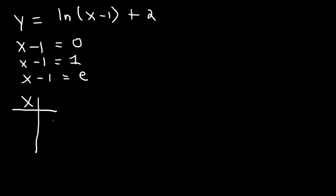Now let's try an example with the natural log function. Let's say ln x minus 1 plus 2. So this time we're going to set the inside part equal to 3 things: 0, 1, and whatever the base is. The base of a natural log function is always equal to e. And now let's find the value of x. So the first one, where x equals 1, that is the vertical asymptote.